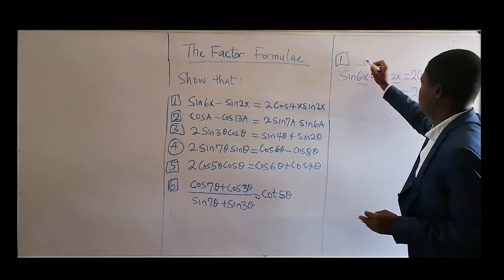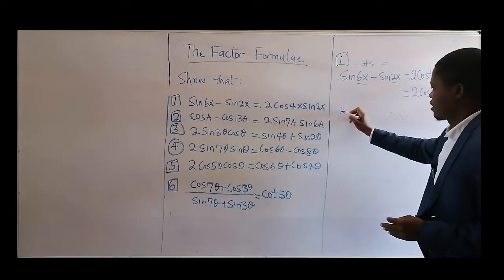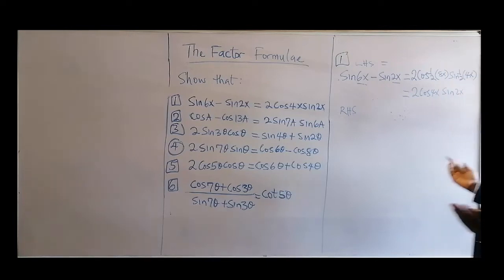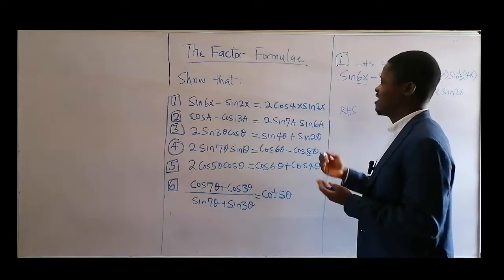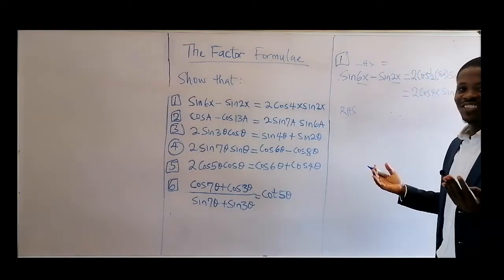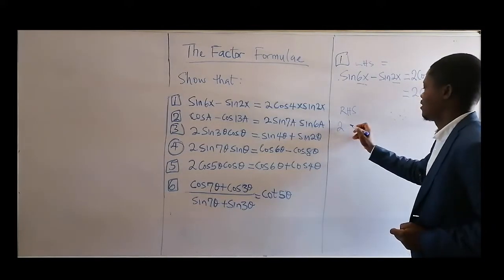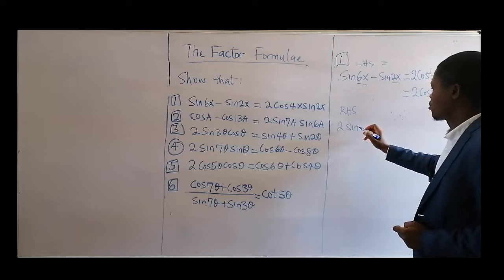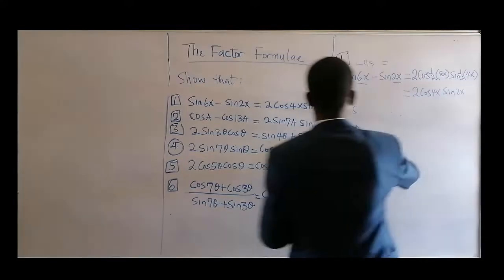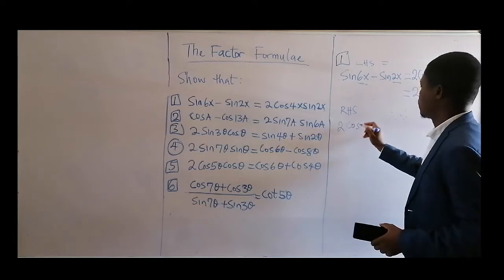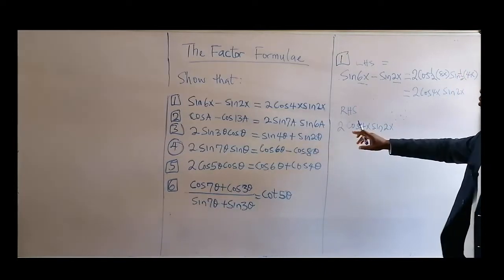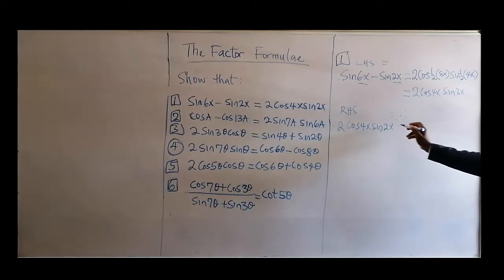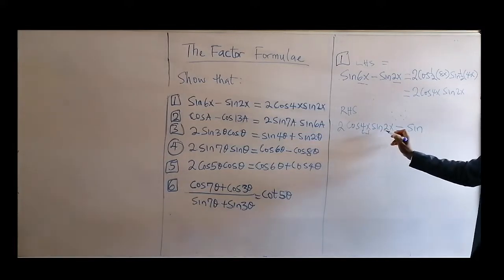That was from the left-hand side to the right-hand side. If you want to start on the right-hand side, it's very simple too. Where you have cosine times sine, it means you have a difference of sines. So we get 2cos(4x)sin(2x), and starting from the right, you have sin(4x + 2x) minus sin(4x - 2x).